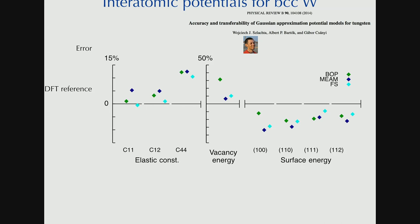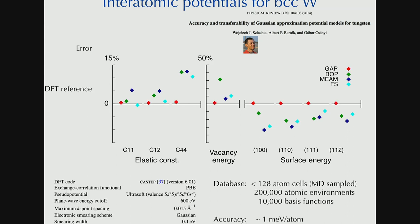If you put this through the SOAP kernel, smooth overlap of atomic positions that I just described, and the Gaussian approximation potential, you get these points. And I didn't cheat. This is real data. So it's not exactly, the error isn't exactly zero. It's a millielectronvolt per atom accuracy. The database are small unit cells. MD on small, typically less than 128 atom unit cells.